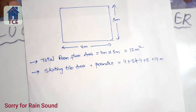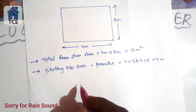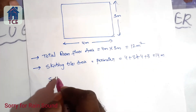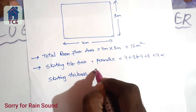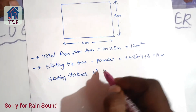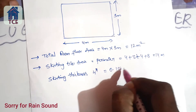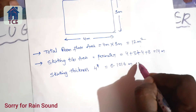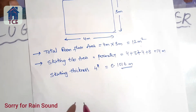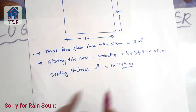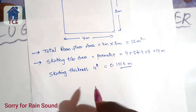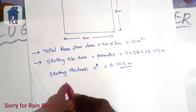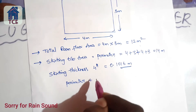So we have 14 meters for the perimeter. This is the cutting. The cutting thickness is 4 inches, also given as 6 inches. Converting 4 inches gives us 0.1016 meters — this is the cutting height. Now, the cutting area equals the perimeter multiplied by the cutting height thickness.